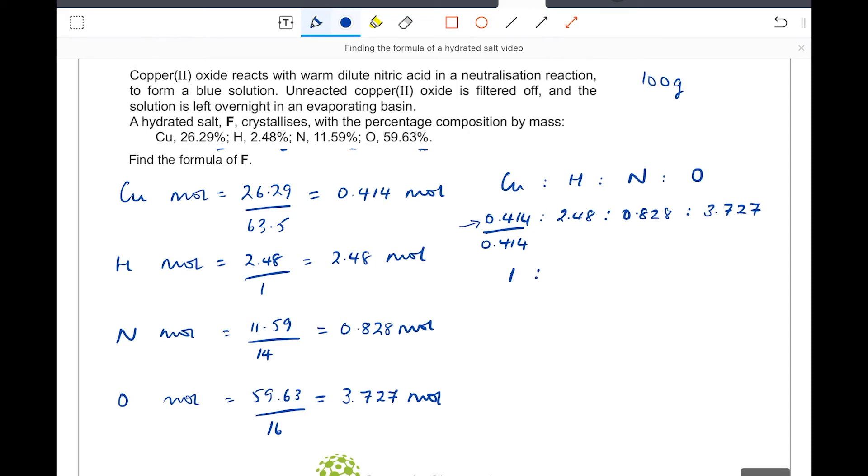If I now divide 0.414 into each of the others, so that into 2.48, that comes out as 5.99, but I'm going to round this up to 6. Into 0.828 for the nitrogen comes out as 2. And 0.414 divided into 3.727 comes out as 9.